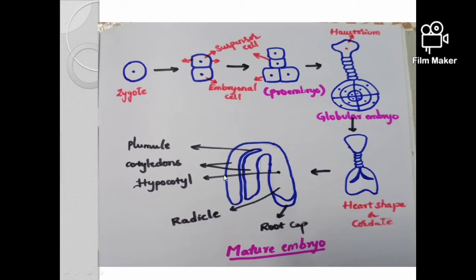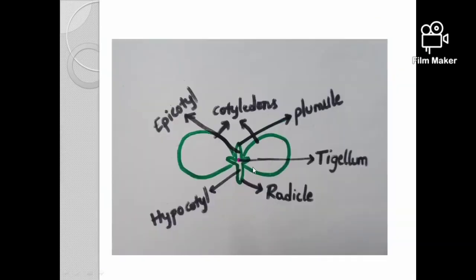The mature dicot embryo consists of 2 cotyledons, 1 hypocotyl, and a radicle with a root cap, and a plumule. The embryonal axis is the tigellum, and the growing tip of the plant is the plumule. The 2 cotyledons are fleshy and store nutritive food material. The part above the cotyledons is the epicotyl.